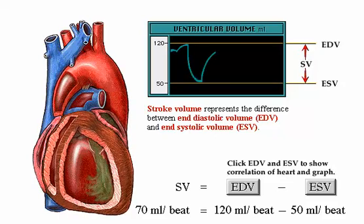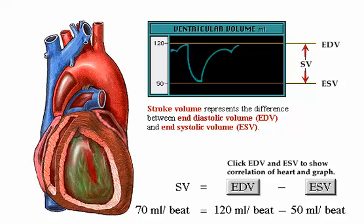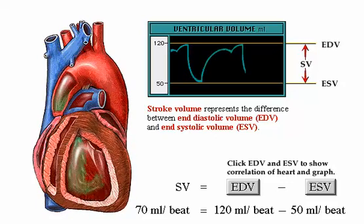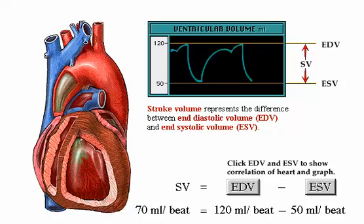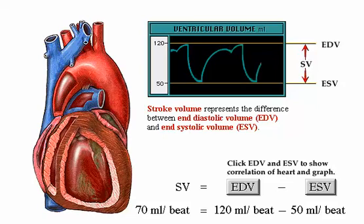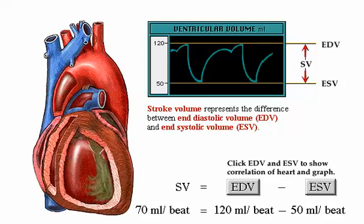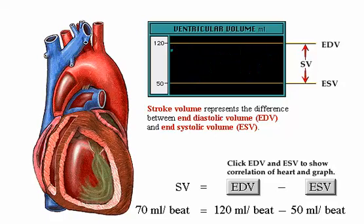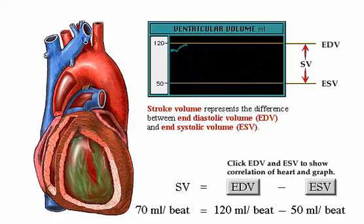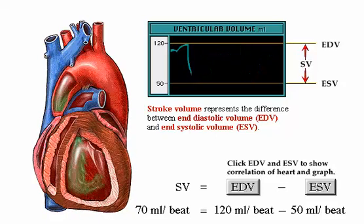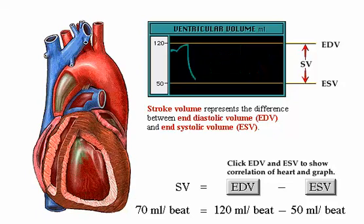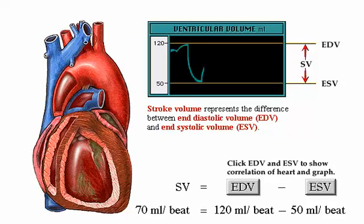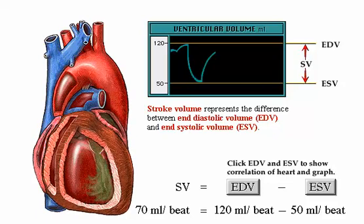The amount of blood ejected during systole is the stroke volume. At the end of systole, the volume of blood remaining in each ventricle is the end systolic volume, or ESV. For example, each ventricle normally contains about 120 milliliters of blood by the end of diastole. At the end of systole, about 50 milliliters remain, meaning 70 milliliters were pumped out during systole.